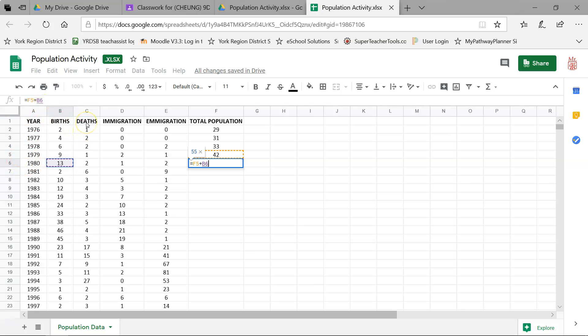Now because deaths is a subtraction. I'm going to press the minus sign. And I'm going to select C6. So now it knows to subtract whatever is in C6. Immigration is an addition. So I'm going to press the plus sign. And then I'm going to click on this D6 at this point. So now it knows to add whatever is in D6. And then a minus sign again. Subtract whatever is in E6. So now Excel knows that I'm going to take whatever number was up here. F5. Add it to B6. Subtract C6. Add D6. And subtract E6. Press enter.